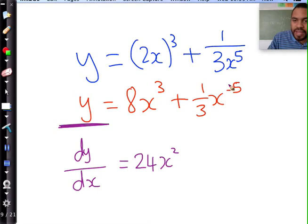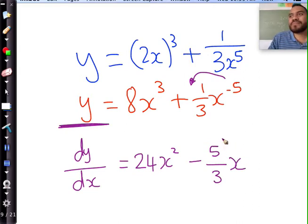24x squared. And this here, minus 5 multiplied by 1 third, it's going to be minus 5 over 3. x to the power of what? Is the power of negative 4. Negative 6. Negative 6, because you must minus 1.